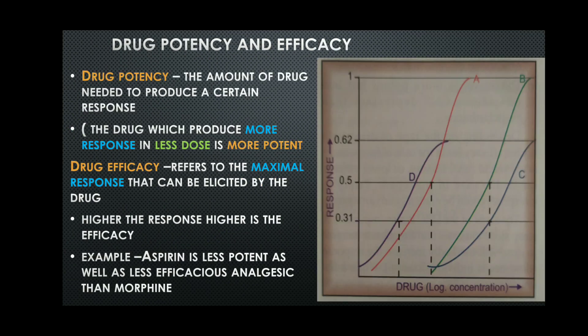The next terminology is drug potency and efficacy. Drug potency is the amount of drug needed to produce a certain response. A drug that produces more response at a lower dose is more potent. If a particular drug produces a given response at a lower dose compared to another drug, it is more potent.